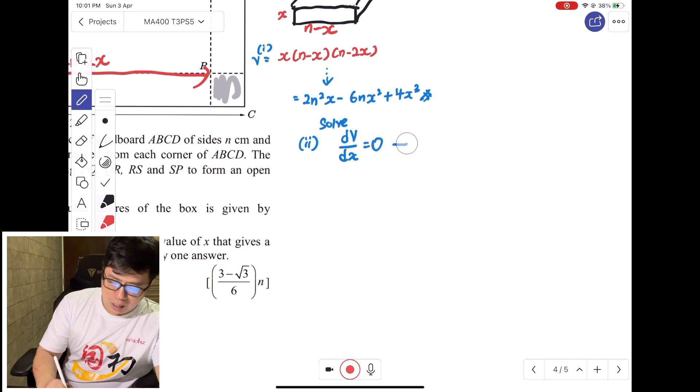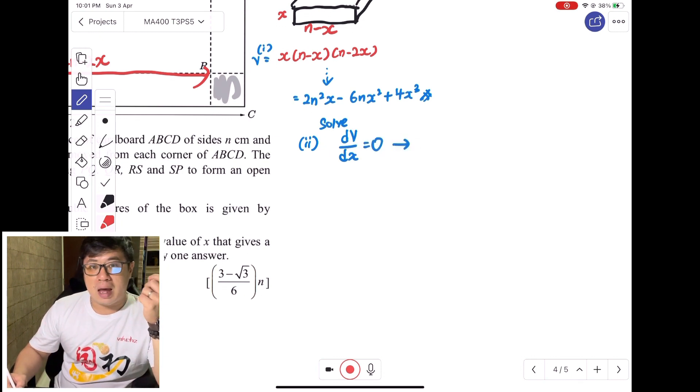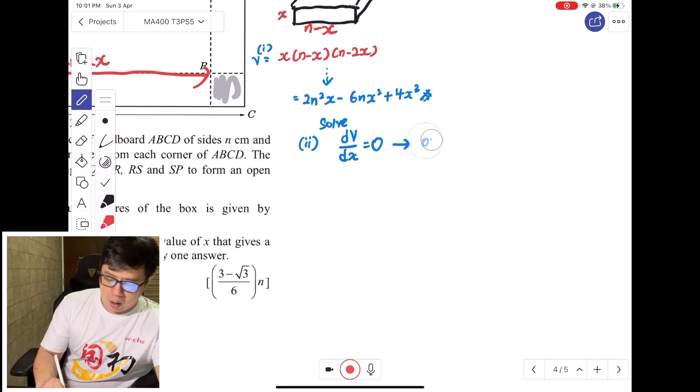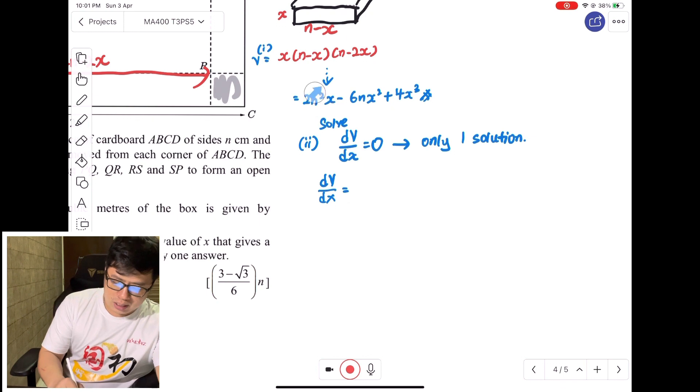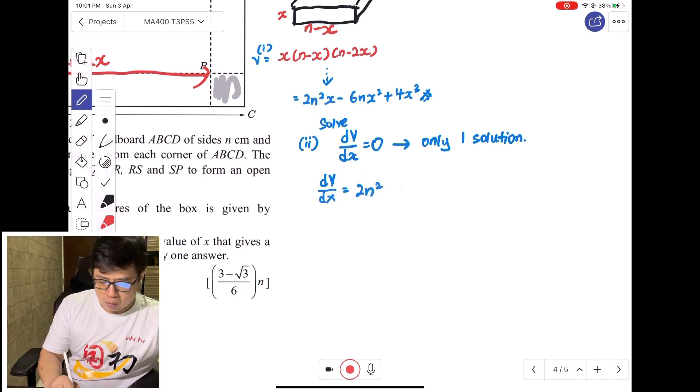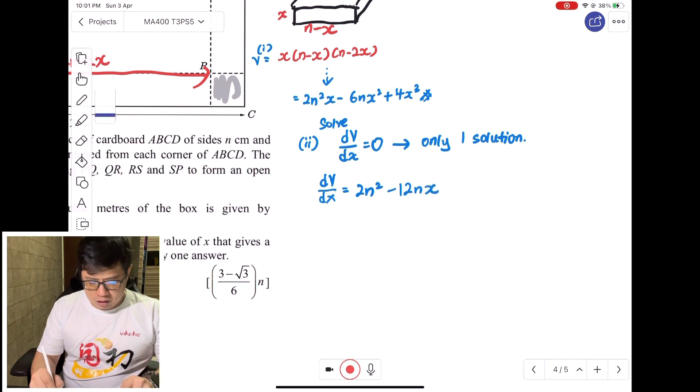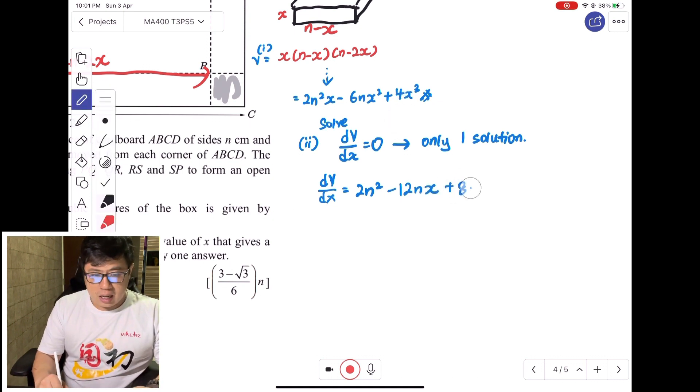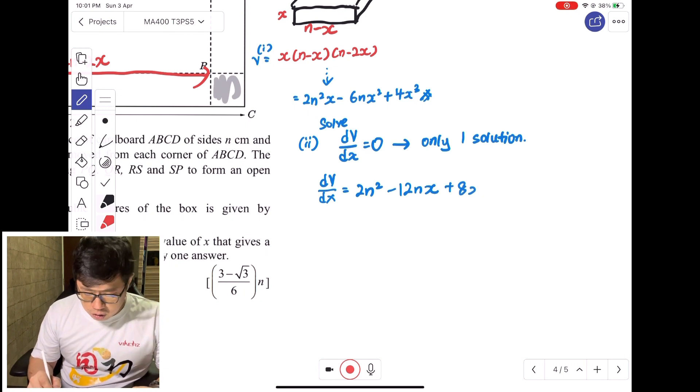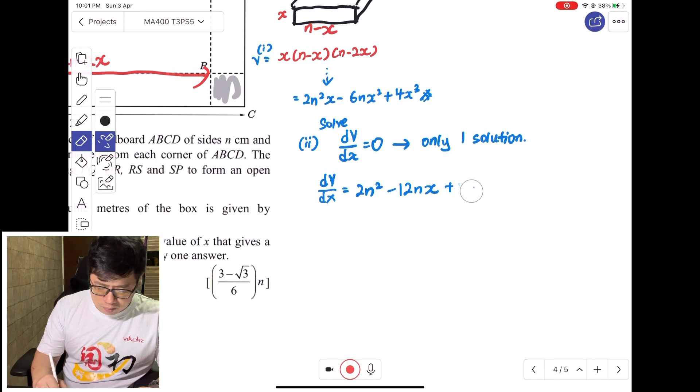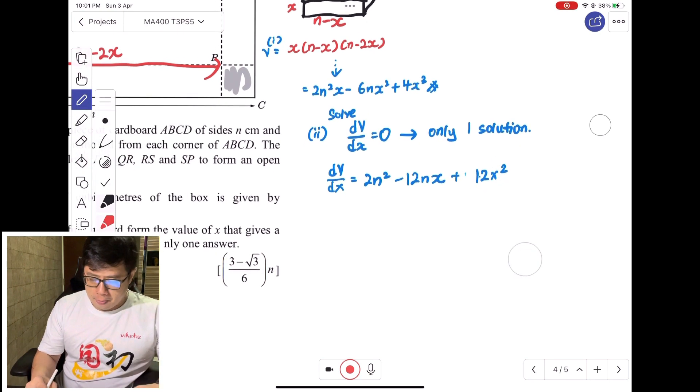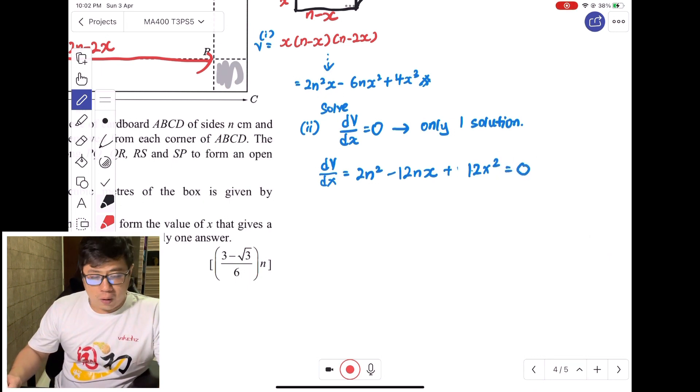Without further ado, we solve for dV/dX. Now dV/dX, if we differentiate V with respect to X: differentiating 2N²X gives us 2N², differentiating -6NX² gives us -12NX, differentiating 4X³ gives us 12X². Now when we equate this to zero, we solve for X.